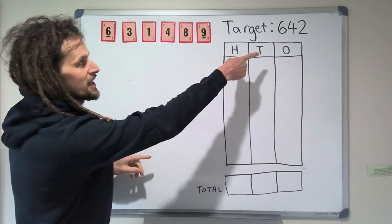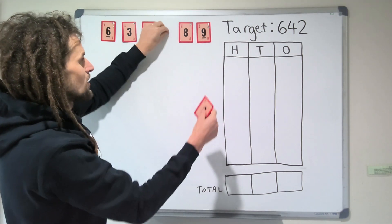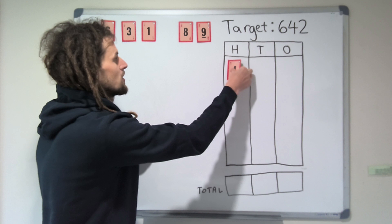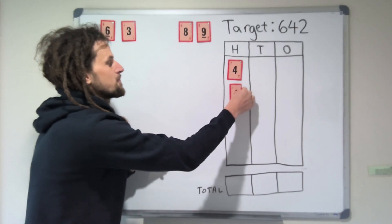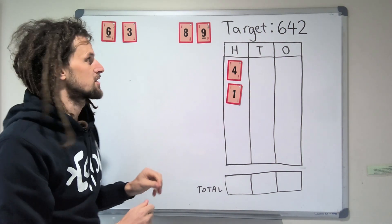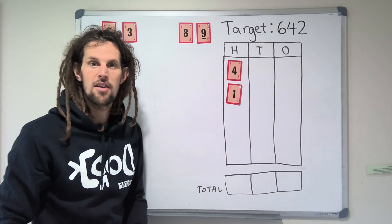I might put, I'm going to try to get close, so I might put the 4 and the 1 in the hundreds column. That gives me 500. So you have to always add these numbers, and you have to use all 6, they're the two rules. So now I'm on 500, I still need another 142.